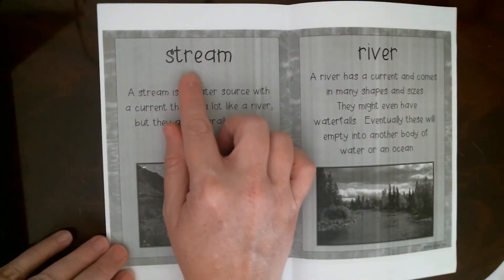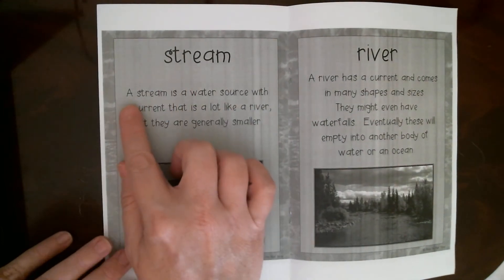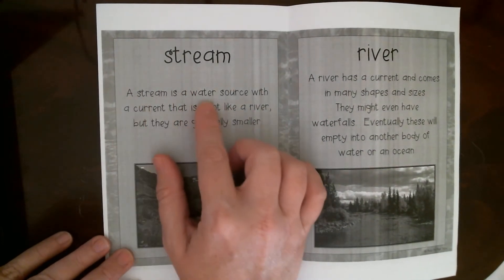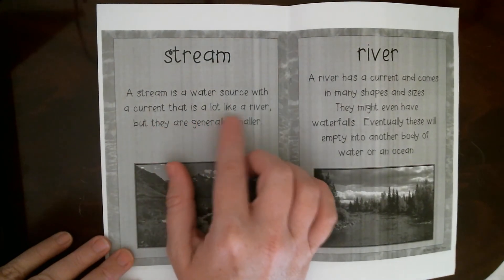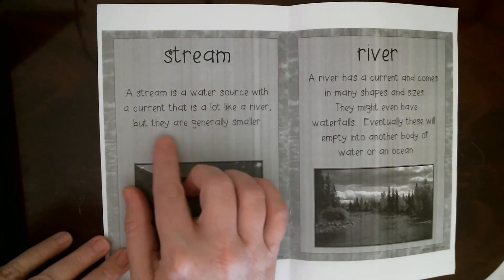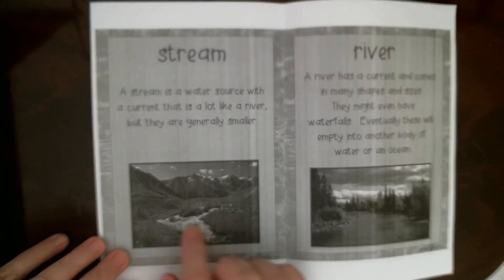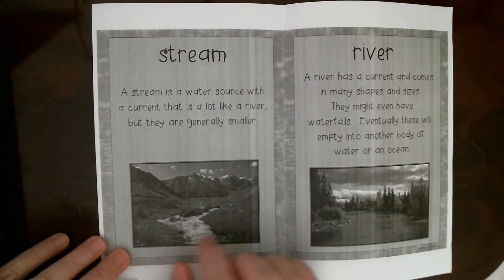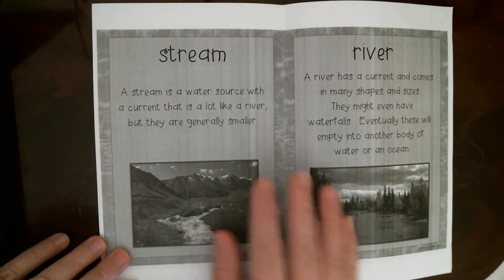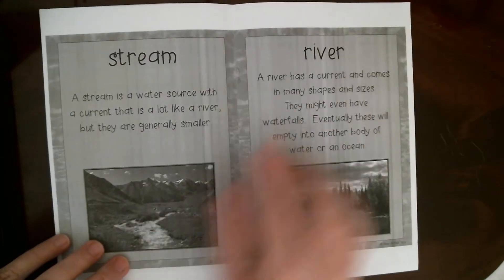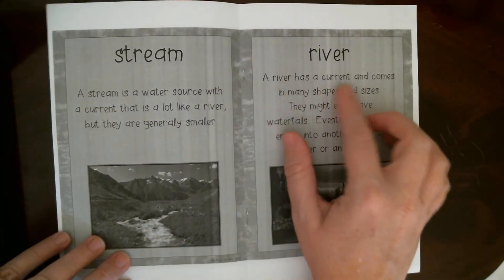The first natural water source is a stream. A stream is a water source with a current that is a lot like a river, but streams are generally smaller. Usually you can just walk across a stream — they're not as wide as a river and don't flow as much.